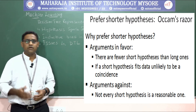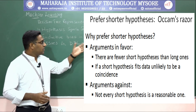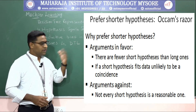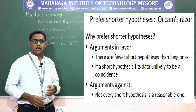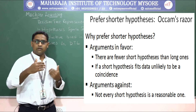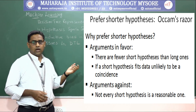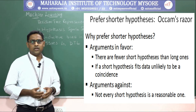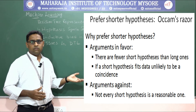Why do we prefer shorter hypotheses, with respect to Occam's razor? There are arguments both in favor and against. In favor: there are fewer short hypotheses than longer ones, so if a short hypothesis fits the data, it is unlikely to be a coincidence. Against: not every short hypothesis is a reasonable one for all types of data.